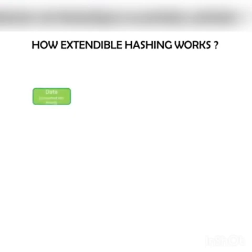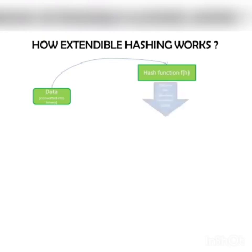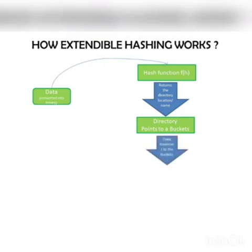Now I will explain how extendable hashing works. First, we need to analyze the data elements and convert them into binary format. Next, we check the hash function, that is the global depth of the directory, and identify the directory. After that, we navigate to the bucket pointed by the directory. During data insertion, data is transferred to the bucket and finally stored or hashed.